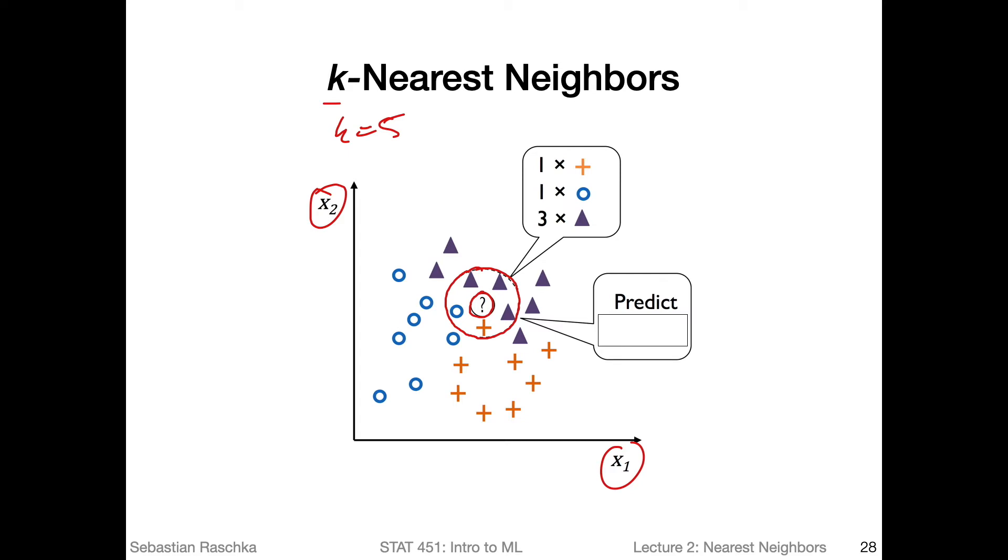So what we do is we take a look at all the data points, or the five closest data points, and we look at the counts of each class. So we see in this case we have 1-2-3 triangles, one circle, and one cross. So that means this triangle is the majority, we have three triangles. The regular k-nearest neighbors approach uses a majority vote to do the classification. So in this case, the predicted class label, can you guess what it is? Yes, it is a triangle.